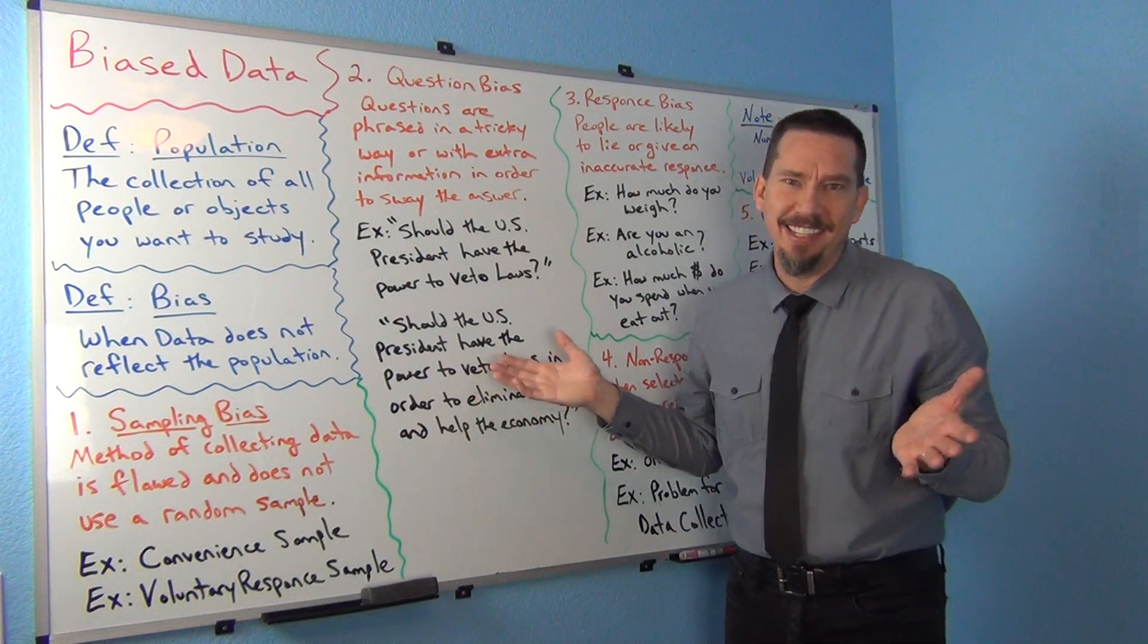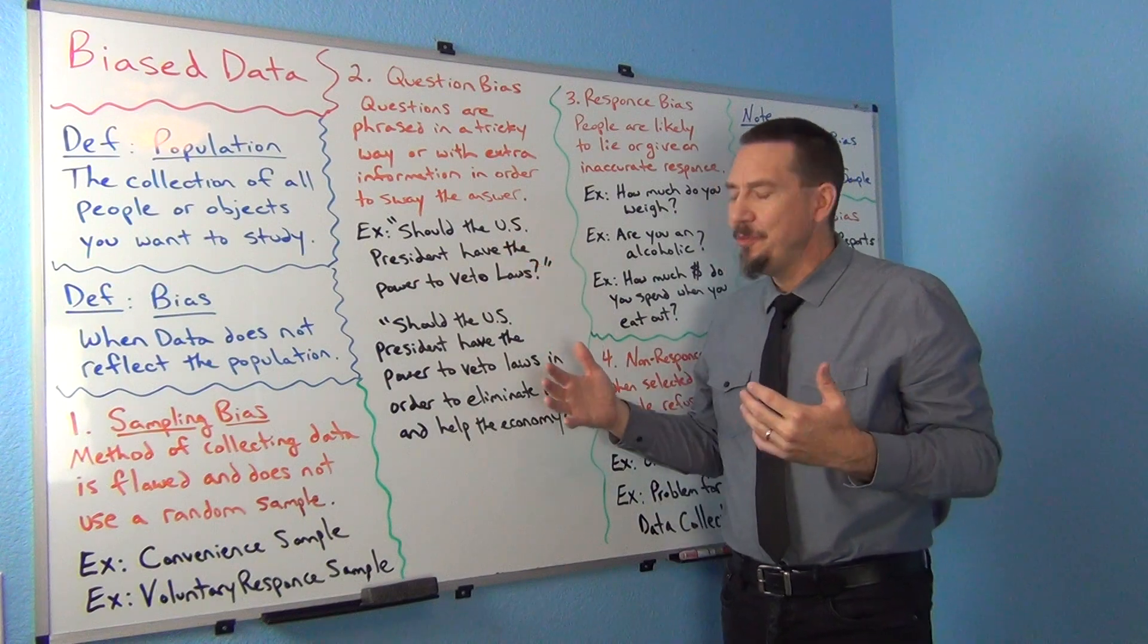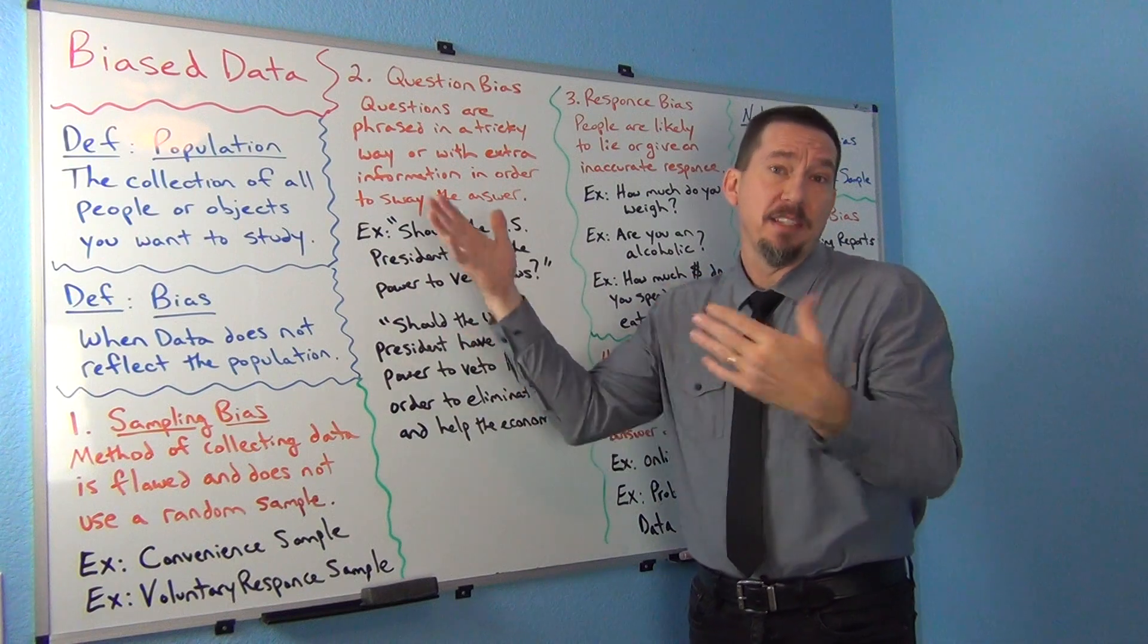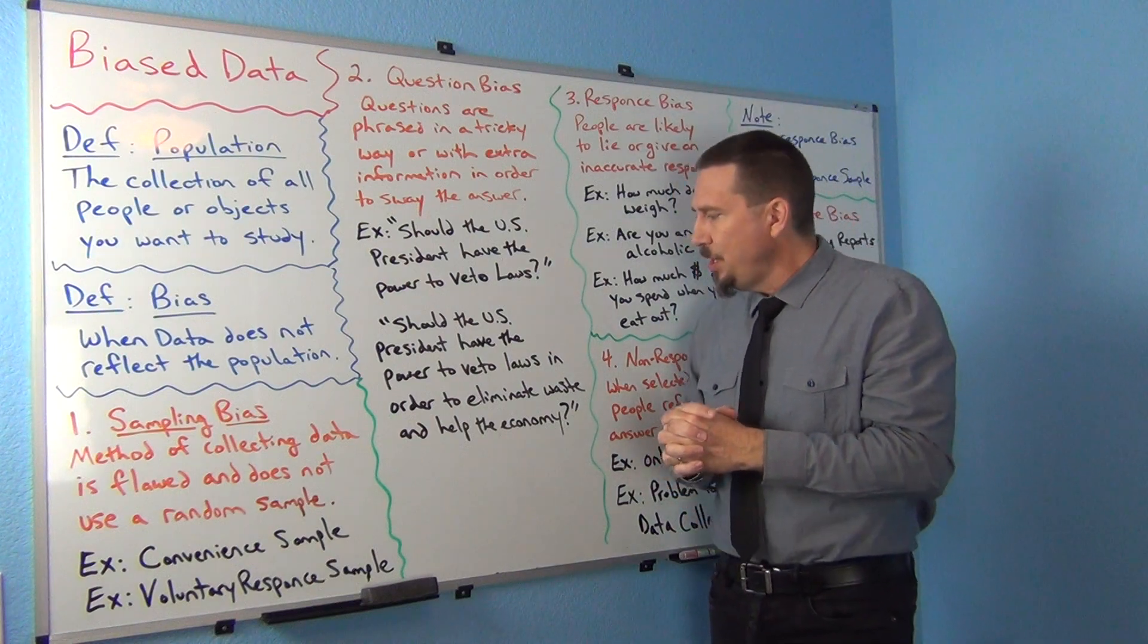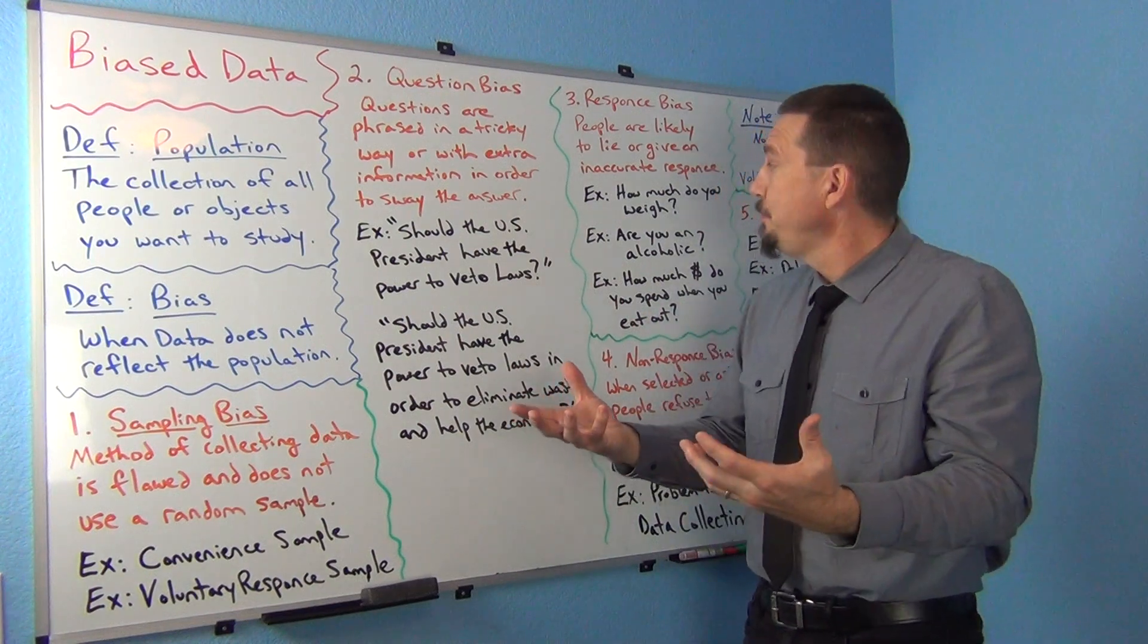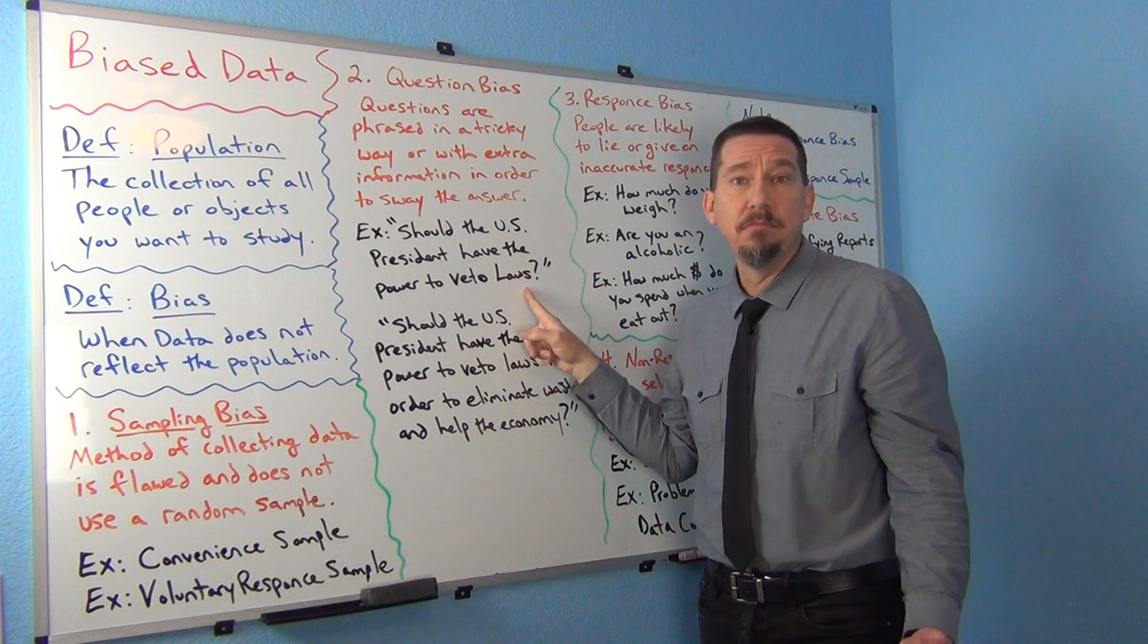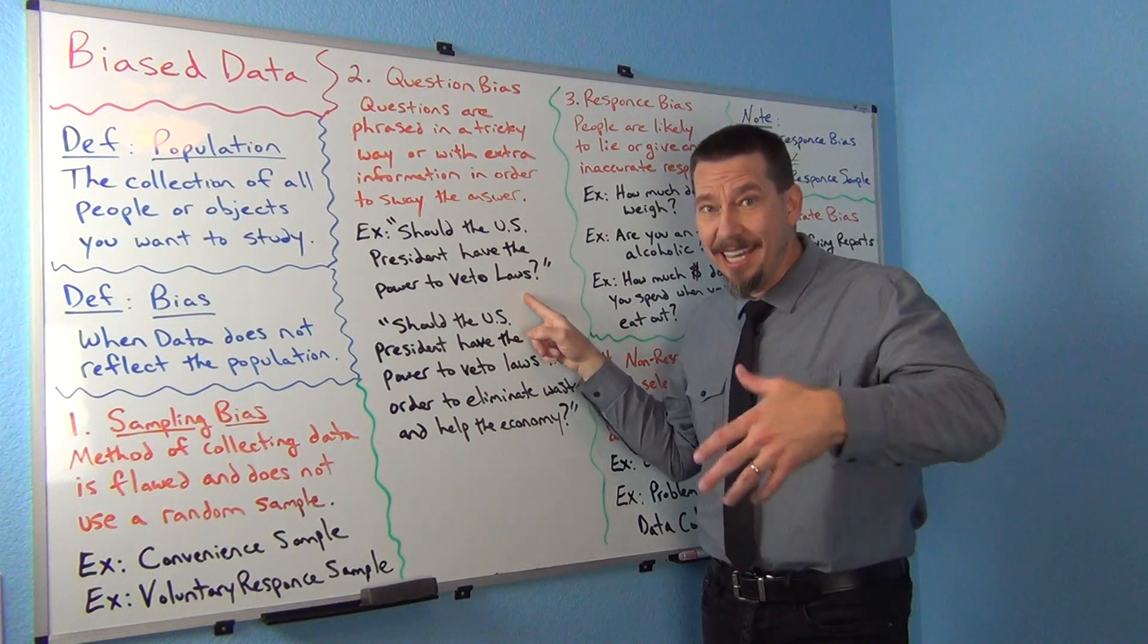Here's a famous example. There was a study done years ago and the question that they asked was about veto power. Should the president, the U.S. president have the power of veto to veto laws passed by Congress? So Congress passes laws, but then the president has the power to veto those laws. Should the president have that power? And they were asking people in the U.S. whether the president should have that power. Now what they should have said was, should the U.S. president have the power to veto laws? That's pretty straightforward. That's how they should have asked the question if they wanted to get some representative data.